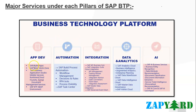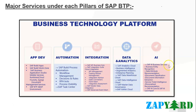Under application development, we have SAP Build Apps, SAP Build Work Zone, SAP BTP ABAP Environment, Kyma, and the different runtime environments. For automation, we have SAP Build Process Automation and SAP Task Center. For integration, we have the SAP Integration Suite, Advanced Event Mesh, and Cloud Platform Integration. For data analytics, we have services such as SAP Analytics Cloud, Data Warehouse Cloud, Data Intelligence Cloud, SAP Master Data Governance, and SAP HANA Cloud. And for the AI pillar, we have SAP AI business services, SAP AI Core, and SAP AI Launchpad.